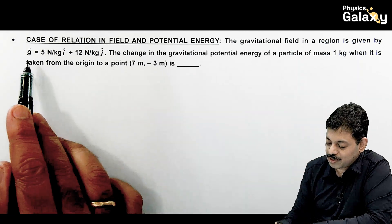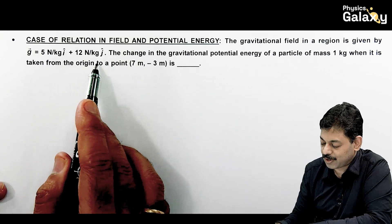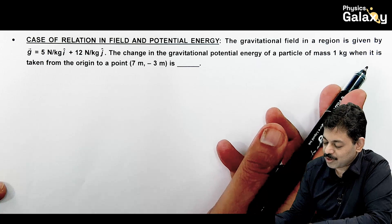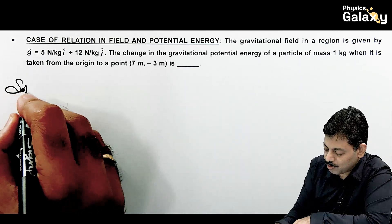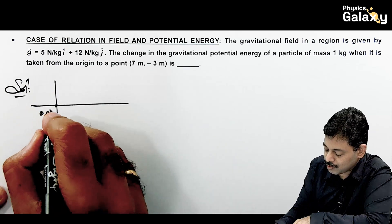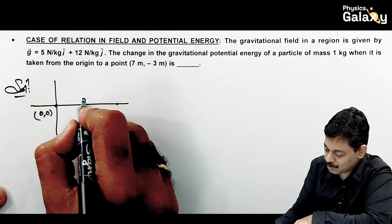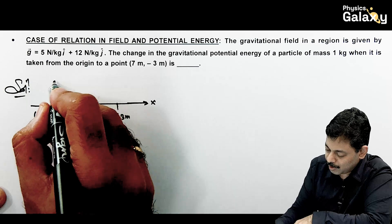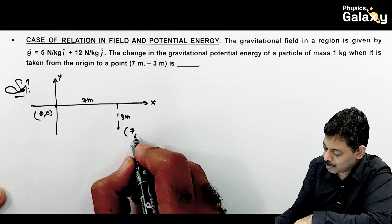The gravitational field in a region is given by 5î + 12ĵ, so it is a constant gravitational field. It asks for the change in gravitational potential energy of a particle of mass 1 kg when taken from origin to the point (7, -3). Visualizing the situation: origin is at (0,0) and the point (7, -3) is 7 meters in x and 3 meters in the negative y direction.